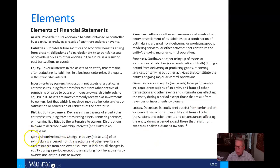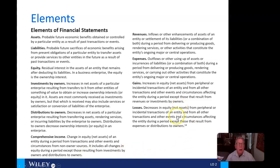One new term here is comprehensive income. Comprehensive income is the change in net assets of an entity during a period from transactions or other events and circumstances from non-owner sources. It includes all changes in equity during a period except those resulting from investments by owners and distributions to owners. You already know about revenues, expenses, gains, and losses, but you may want to fine-tune your thinking by reading this in more depth.